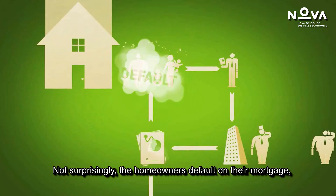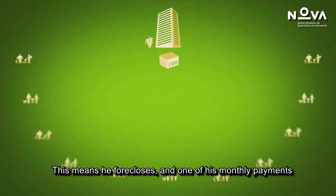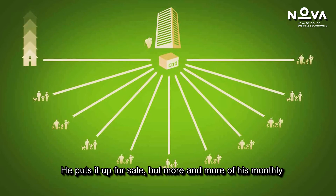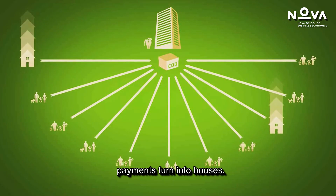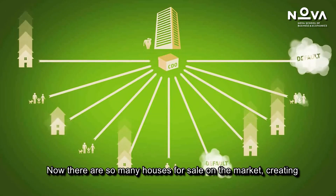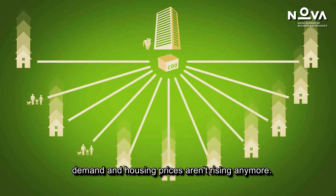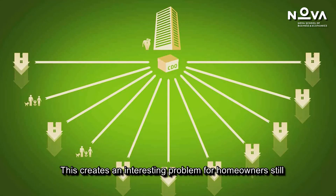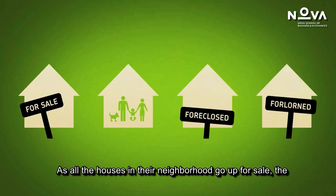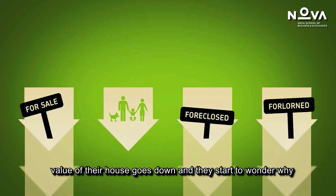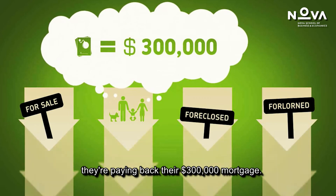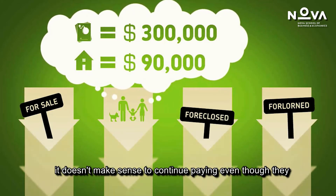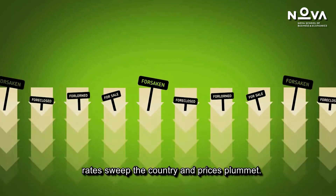Not surprisingly, homeowners default on their mortgages. The banker forecloses and monthly payments turn into houses. More and more houses go on sale, creating more supply than demand, and housing prices stop rising — in fact, they plummet. This creates a problem for homeowners still paying their mortgages: they start to wonder why they're paying back a $300,000 mortgage when the house is now worth only $90,000. They decide it doesn't make sense to continue paying, even though they can afford to, and they walk away. Default rates sweep the country.